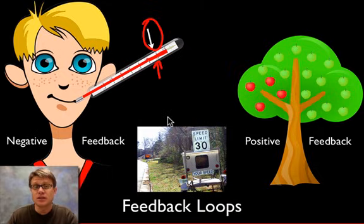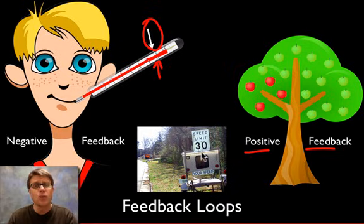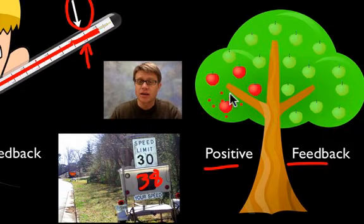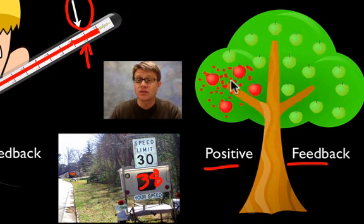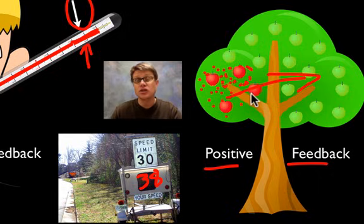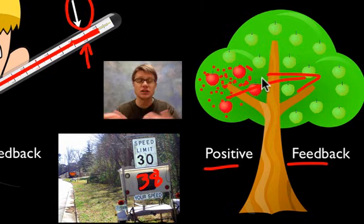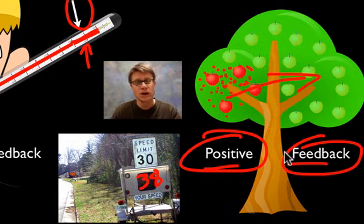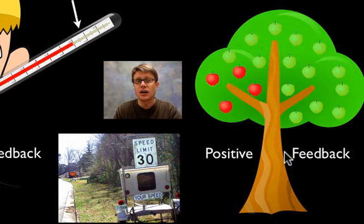Almost all feedback loops in living systems are going to be negative feedback loops. Positive feedback loops occur when we want to go in one direction away from a set point. For example, a ripe apple gives off ethylene, which causes other apples to produce ethylene, until the whole tree turns red at once. Another example is childbirth, where the baby's head pressing on the cervix creates contractions which put more pressure on the cervix. We only have positive feedback loops when we want to go in one direction as quickly as possible.